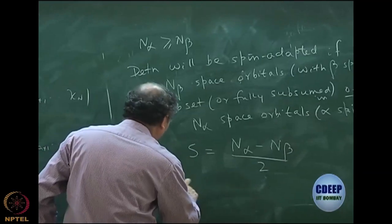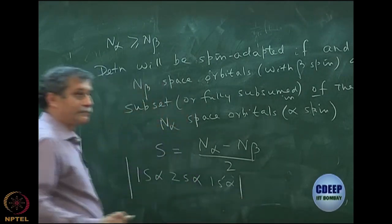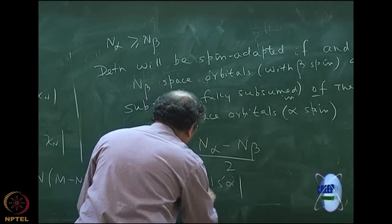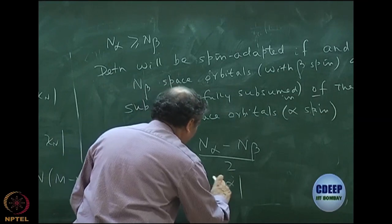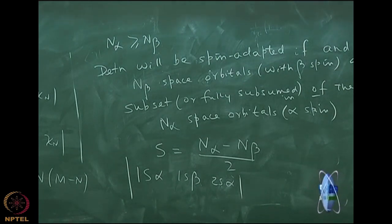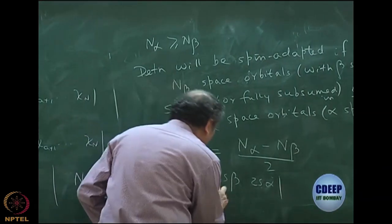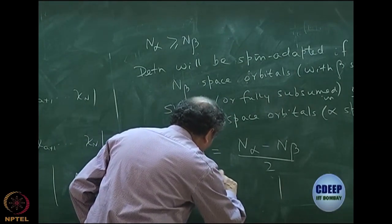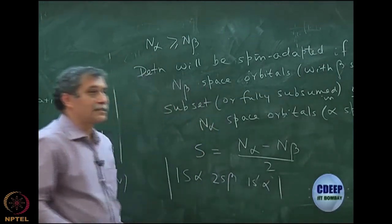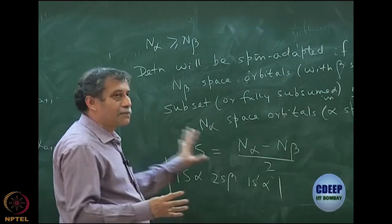For example: a determinant with 1s alpha, 2s alpha, and 1s prime alpha, plus 1s beta - is this spin-adapted? Yes, because the beta part 1s is contained in the alpha list. But consider 1s alpha, 2s beta, 1s prime alpha - is this spin-adapted? No, because 2s beta is not contained in the alpha space orbitals.